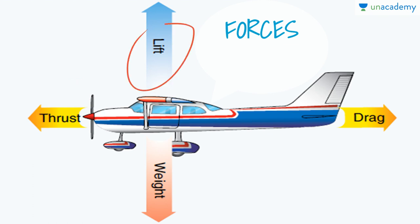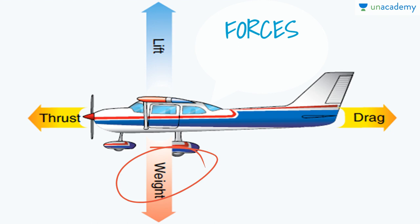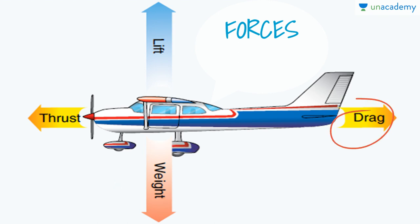Lift is the force generated by the flow of air around the airplane, with the major portion resulting from the wing. It represents the component of the resultant aerodynamic force normal to the line of flight. Drag also arises from the flow of air around the airplane, but it is the component of the resultant aerodynamic forces along the line of flight.